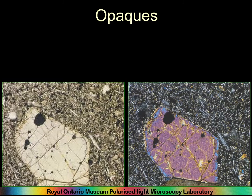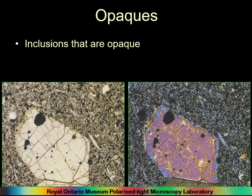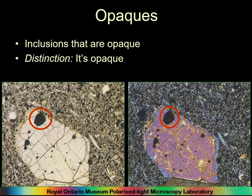Starting at the top of the page: opaques. You'll be identifying them simply as opaques. Any inclusions that are opaque — the distinction is that it's opaque. You need to record opaques because there might be a big difference between one type of pottery and another by the number of opaques present. Always record opaques, but really for us they're just opaque, so don't worry too much.